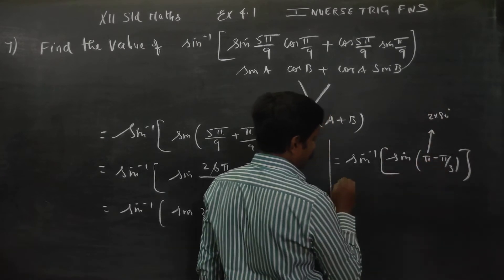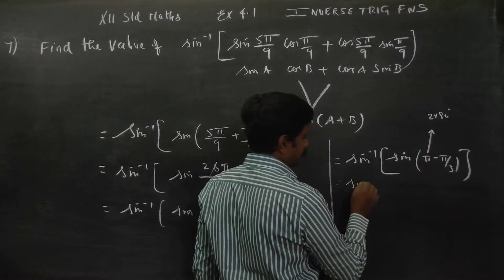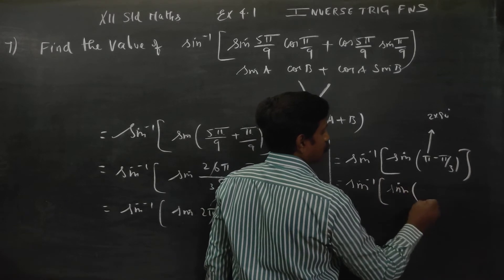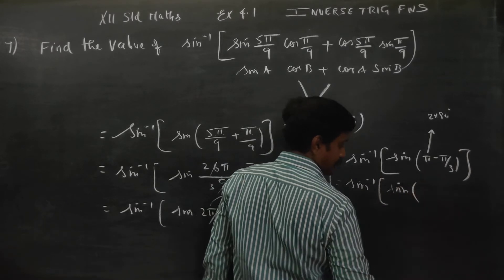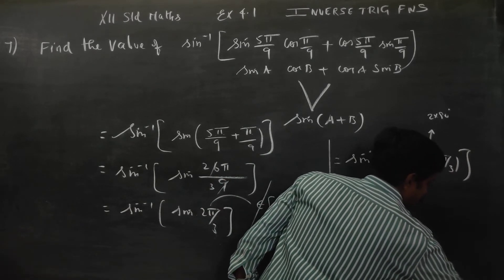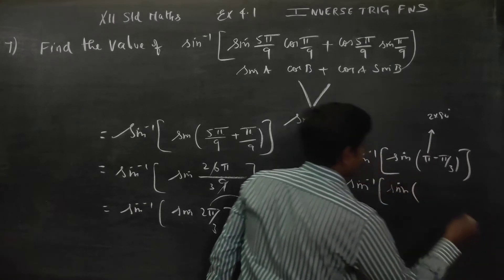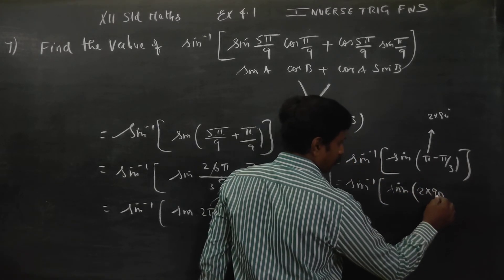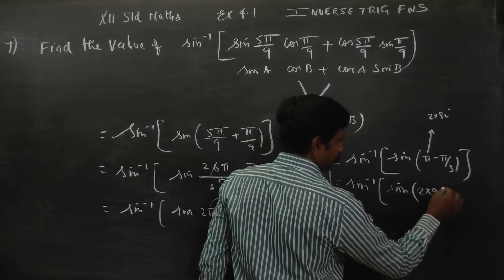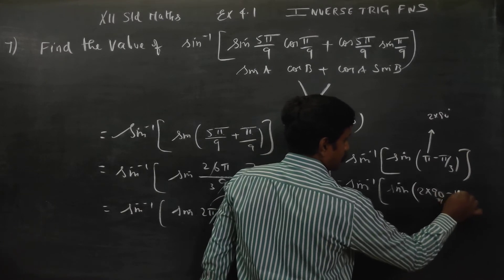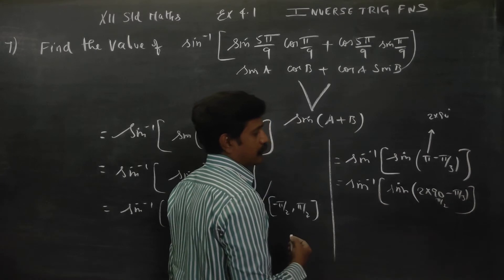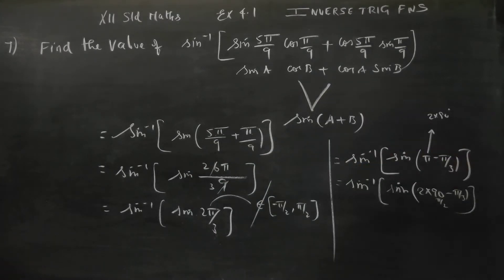This can also be written as sin inverse of sin(2×90 minus π/3), that is sin(2 × π/2 minus π/3). So we have sin inverse of sin(2×90 minus π/3).